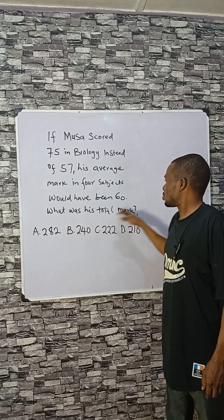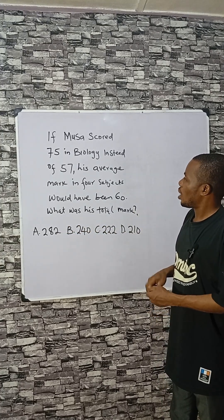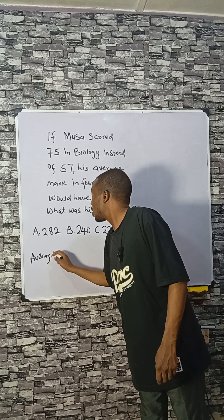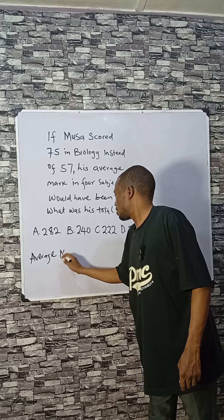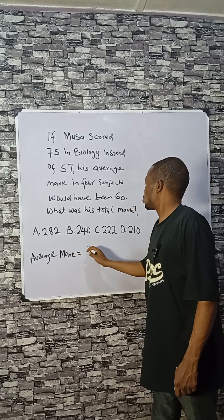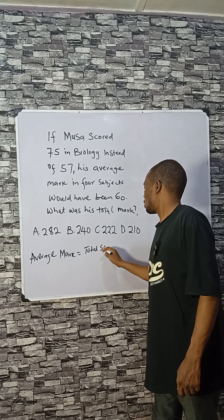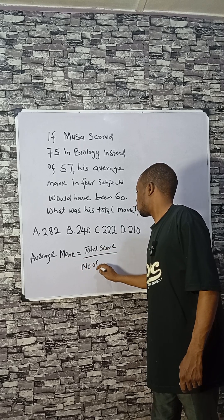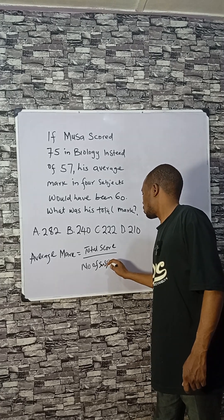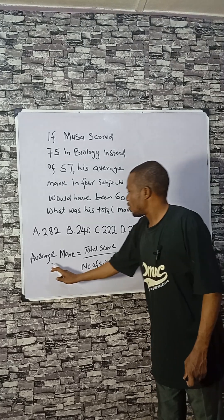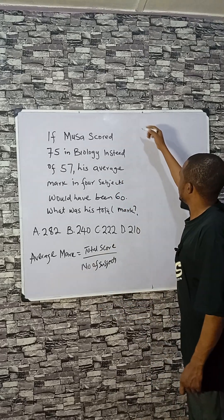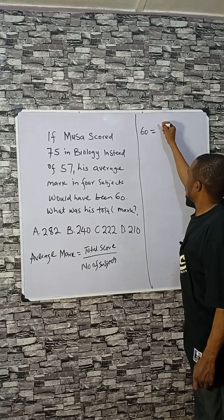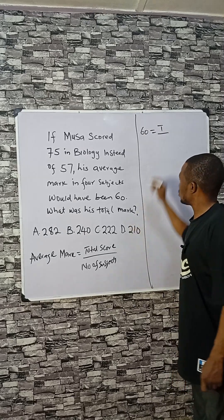What was his total mark? The average mark is the total score divided by the number of subjects that Musa took. The average mark obtained if he had scored 75 is 60, so: total divided by number of subjects taken, which is 4, equals 60.